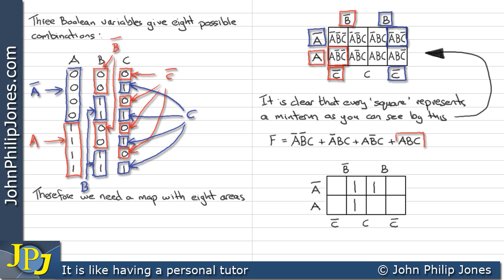This minterm here is A, B and C, which is this area, therefore we draw a 1 in here. Once we have plotted all the 1s, we draw a loop around all of them — a loop of 4 in this particular case.